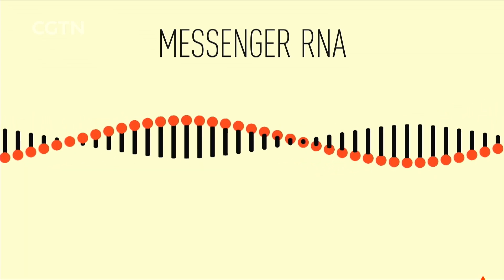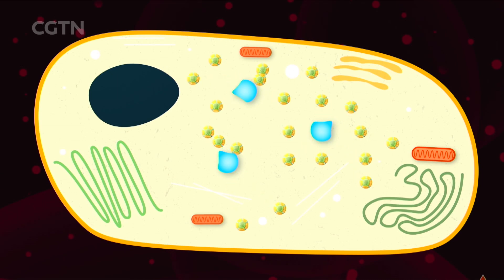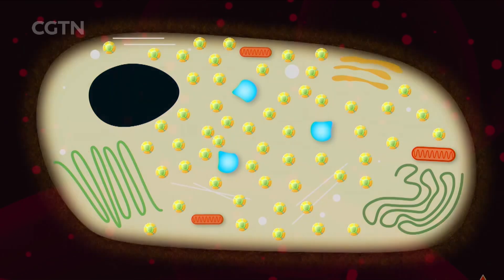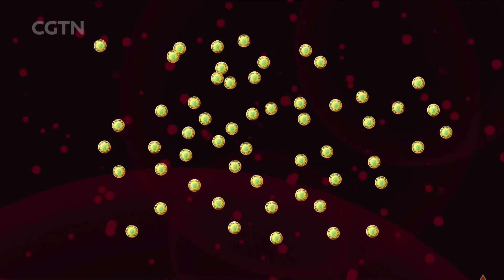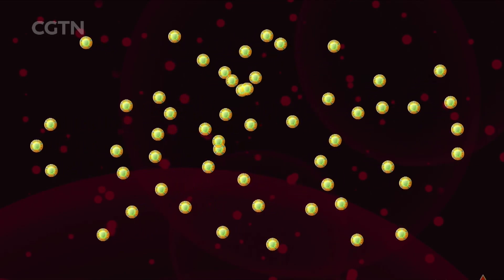The new messenger RNA from the virus goes to the ribosome, instructing it to produce replications. This repeats with more ribosomes being hijacked until the cell is full of virus replications, causing it to burst and die, releasing the virus to infect more cells.